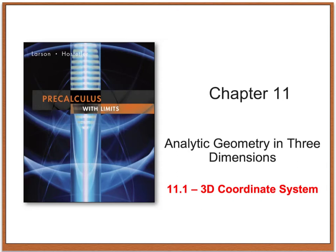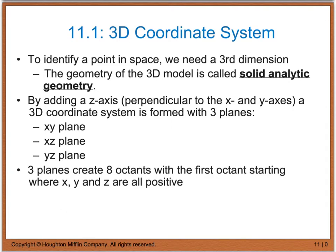Hello and welcome to Chapter 11. Today we're going to look at 11.1, which deals with three-dimensional coordinate systems. So far, we've been dealing with two-dimensional, or 2D, coordinate systems, which is occurring on a Cartesian plane. In order to identify a point in space, we need what we call a third dimension. When we model this in a third dimension, this is called solid analytic geometry.